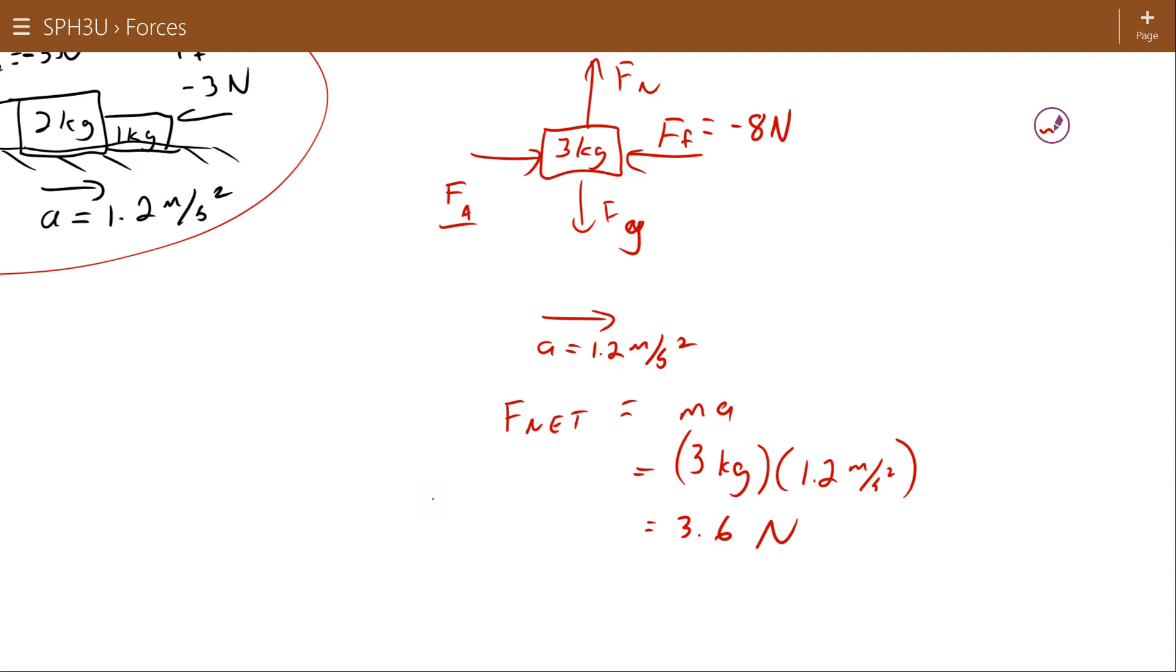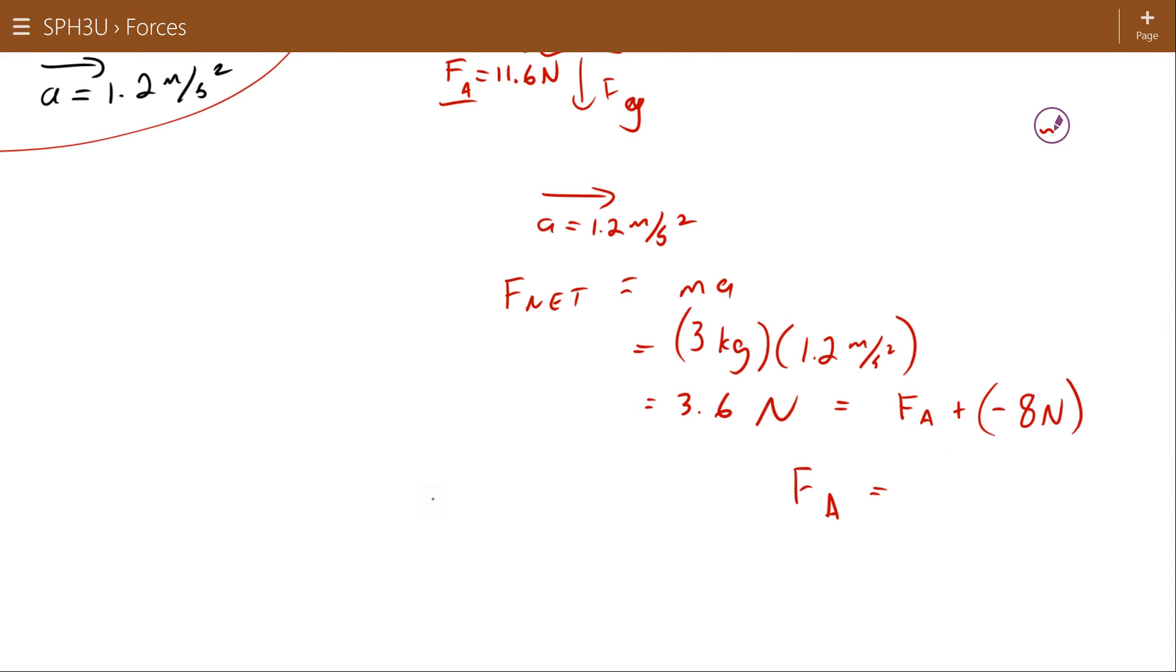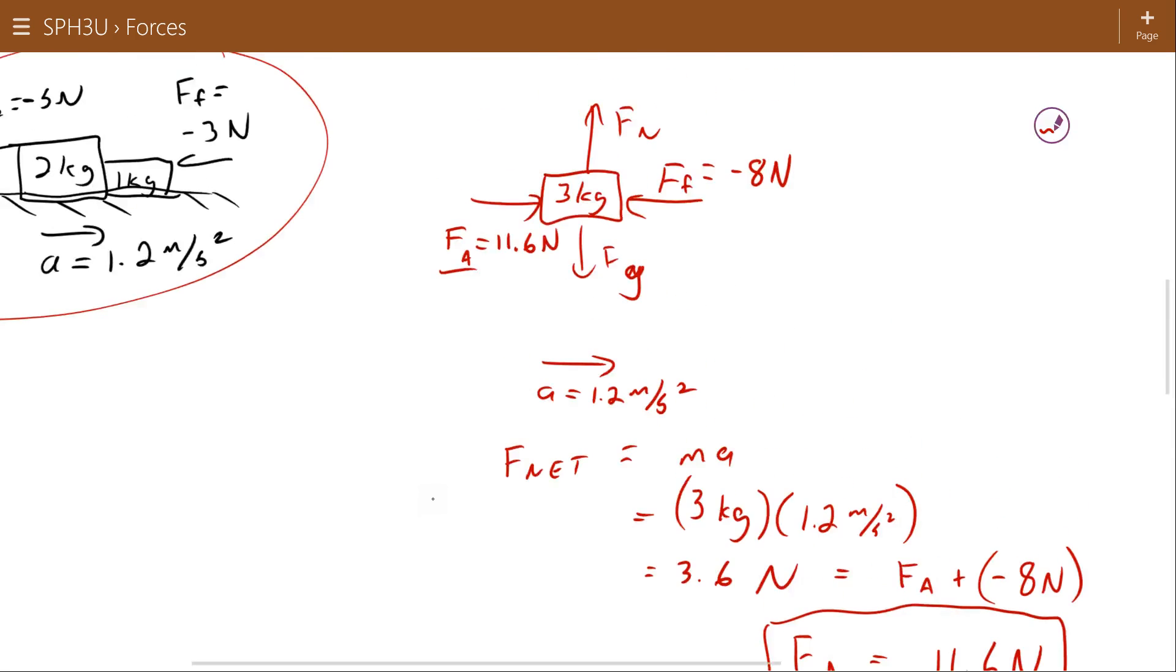If I'm a little bit clever here, I can look at 3.6 and know that I have to overcome this 8 newton force, so I can do this by inspection and see that it's 11.6 newtons. 11.6 less 8 will give me my 3.6. But if you're not seeing that immediately, the easiest thing to do is to recognize that the net force is the sum of the forces and use the equation properly. It's always a good idea to substitute into the equation and not just look at it, and that way you'll avoid making a minor mistake. So that's the overall force applied to the system.